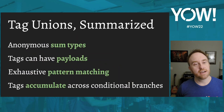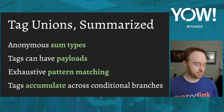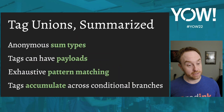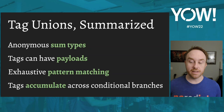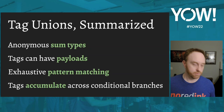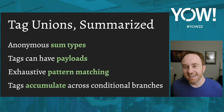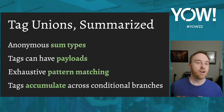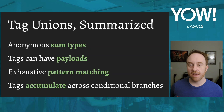To summarize tag unions: they are anonymous sum types, they can have payloads, they support exhaustive pattern matching, and tags accumulate across conditional branches. This might seem like a neat feature, but what does it have to do with effects? How do you build an effect system on top of this?